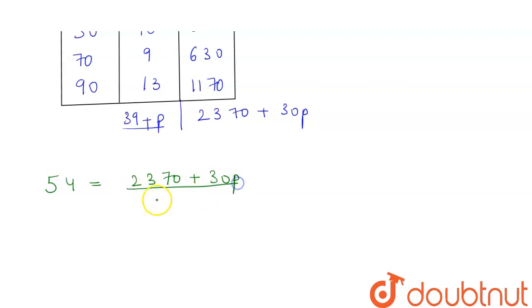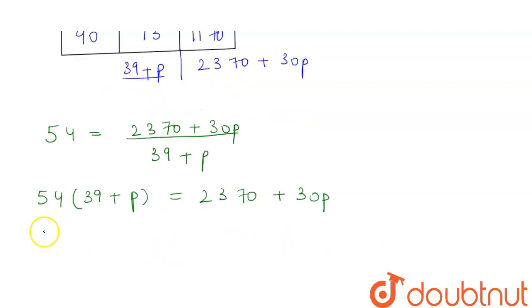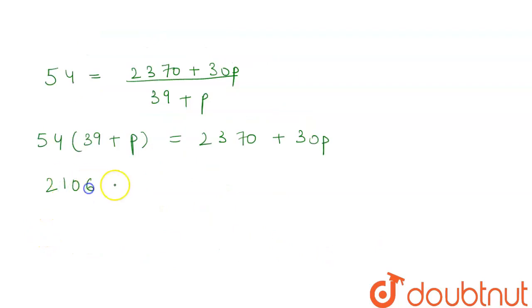So mean, that is 54, is equal to summation of xi into fi, which is 2370 plus 30p, divided by summation of fi, which is 39 plus p. This will give us 54 into 39 plus p is equal to 2370 plus 30p. This will become 2106 plus 54p is equal to 2370 plus 30p.